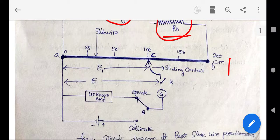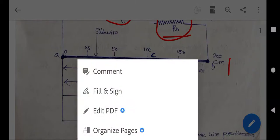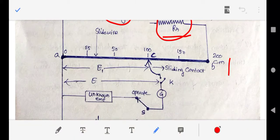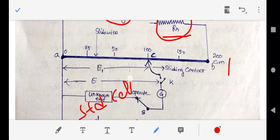A galvanometer is connected via switch K. When the switch is in the operate position, the unknown voltage is measured; when in the calibrate position, the standard cell is connected. The standard cell provides a constant voltage of 1.0186 volts, which is the reference for standardization.